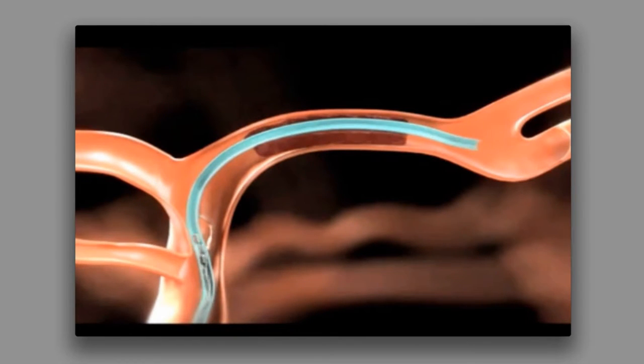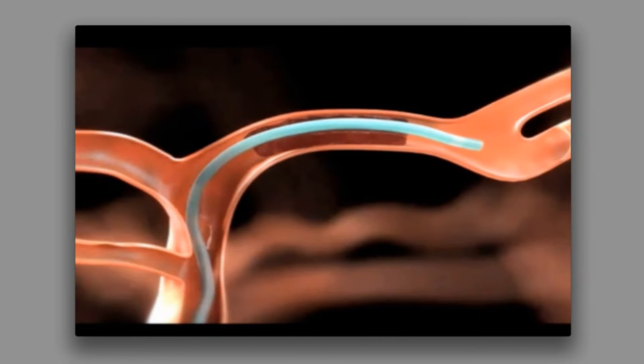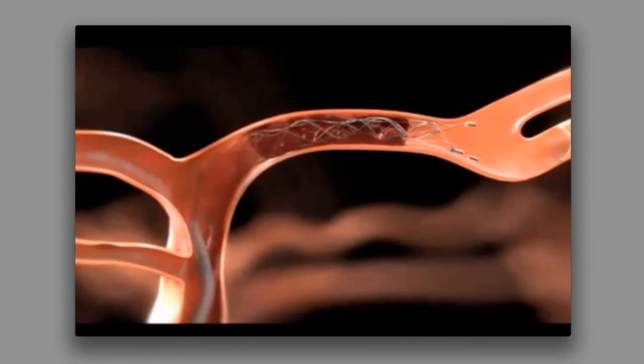The wire is then withdrawn, leaving the catheter in place, and the catheter is used to slowly advance the stroke treatment device into place. With the treatment device across the clot, the catheter is withdrawn, exposing the retrievable stent, and allowing it to enmesh the clot.